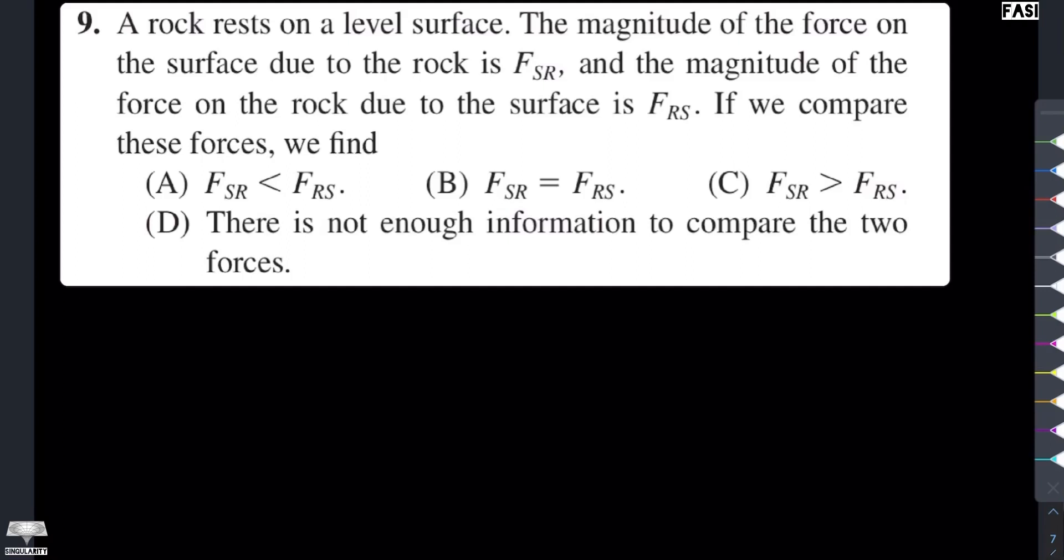This is the ninth multiple choice question of chapter 3 of the book of Halliday, Resnick and Crane. The statement of the problem is: a rock rests on a level surface. The magnitude of the force on the surface due to the rock is FSR, and the magnitude of the force on the rock due to the surface is FRS.